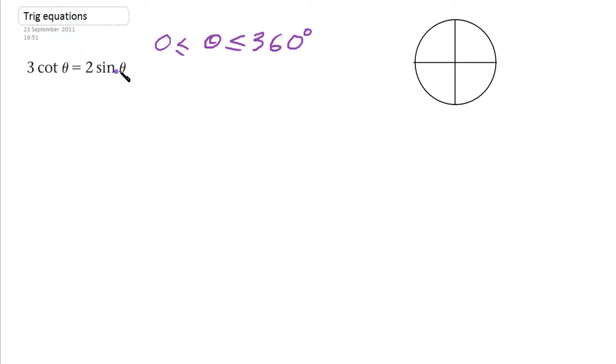So let's change this so it's all in terms of sine and cos, because we can't relate cot and sine. So we know that cot equals cos theta over sine theta, and that equals 2 sine theta.